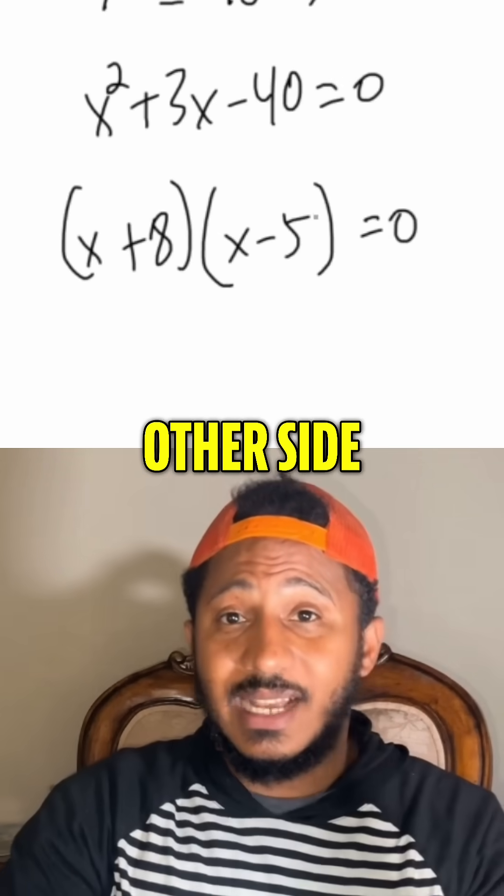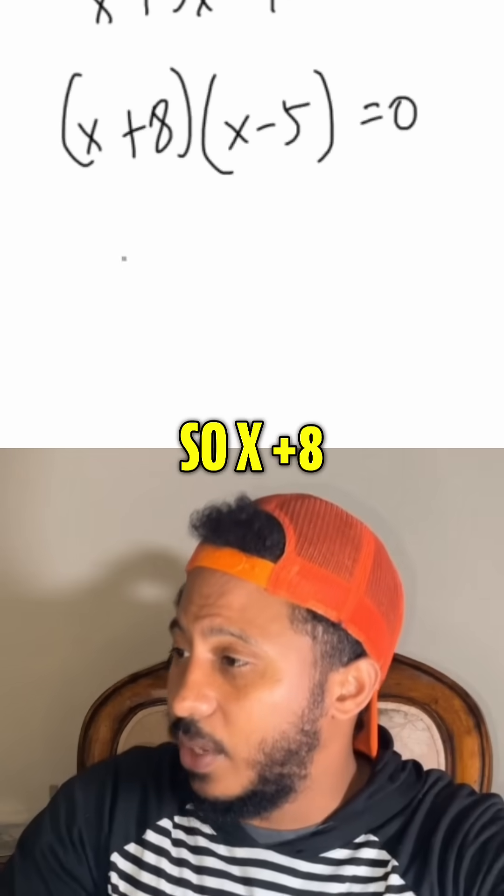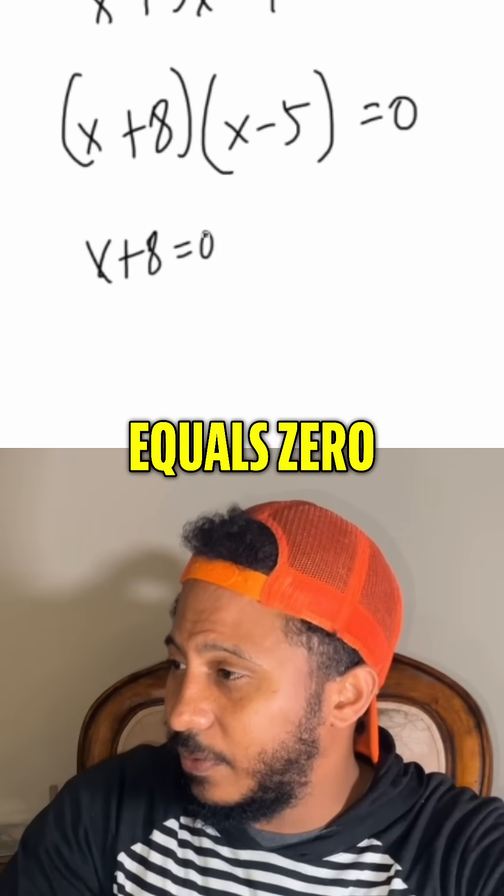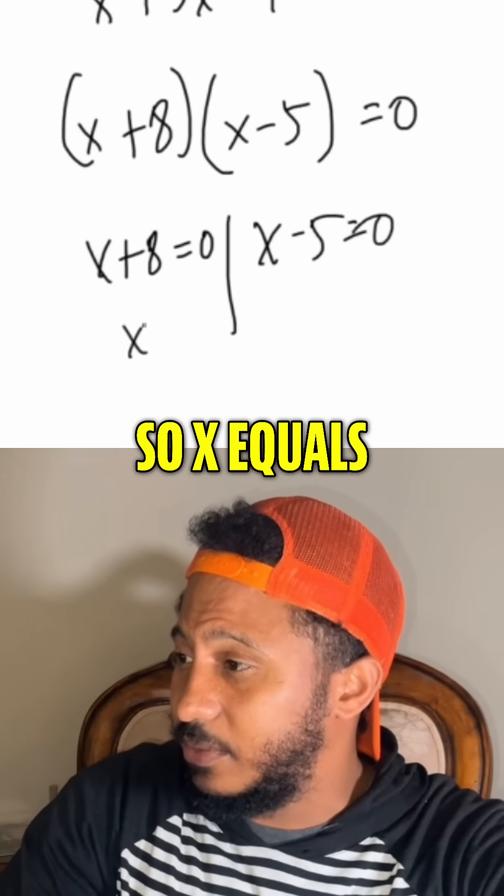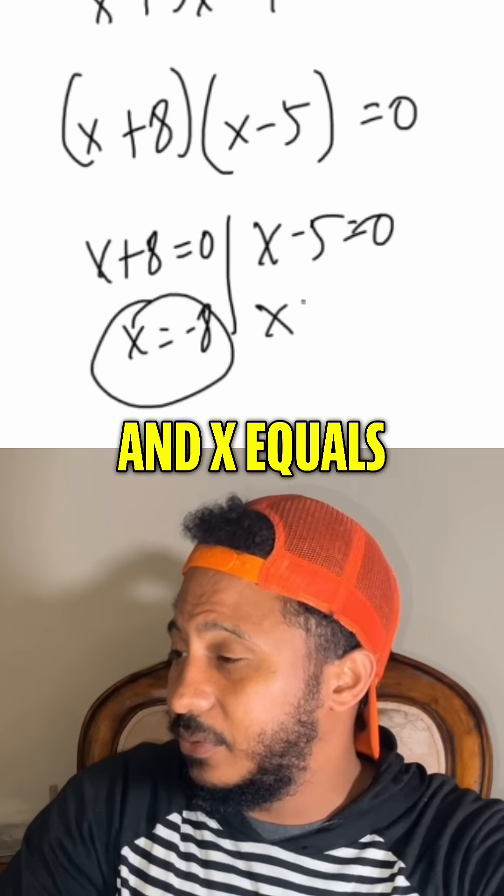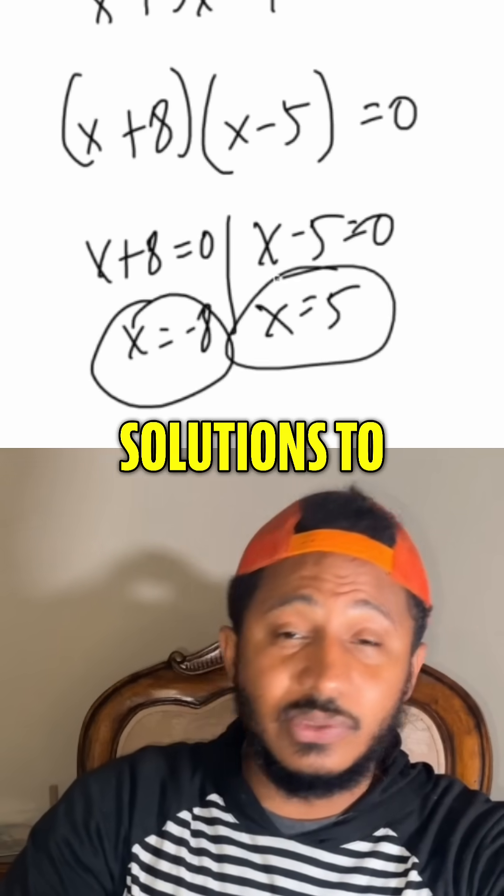So we got 0 on one side. Factor the other side. Set each factor equal to 0. So x plus 8 equals 0 and x minus 5 equals 0. So x equals negative 8 and x equals 5. And that's my two solutions to this equation.